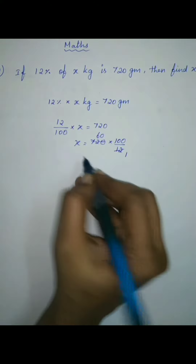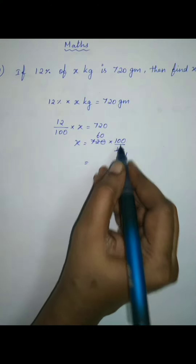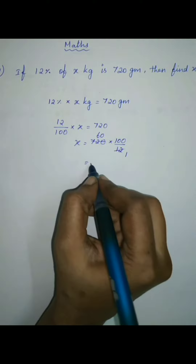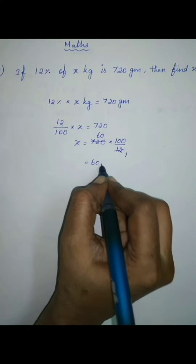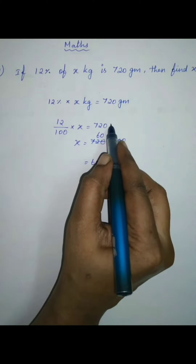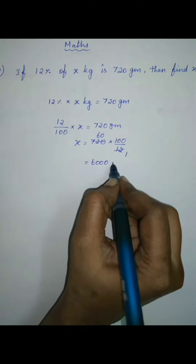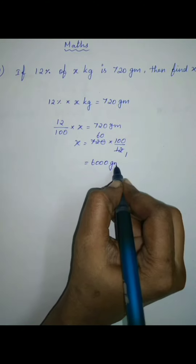So, 60 into 100 equals 6000 grams. So, 6000 grams.